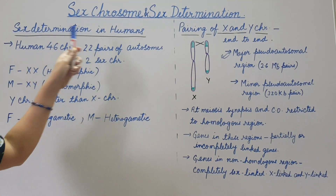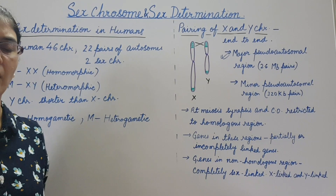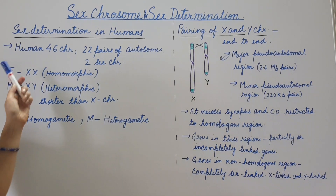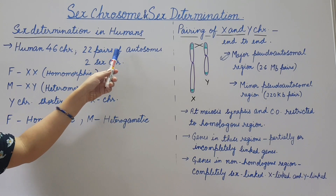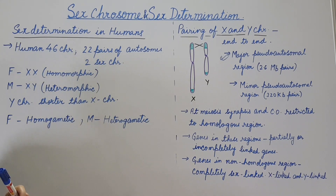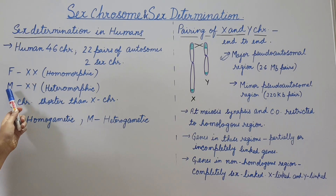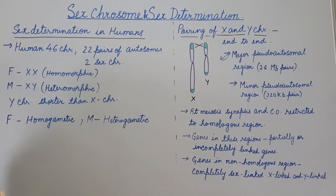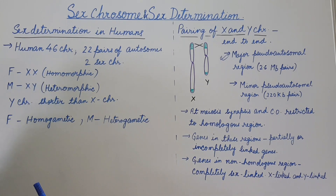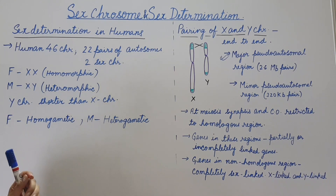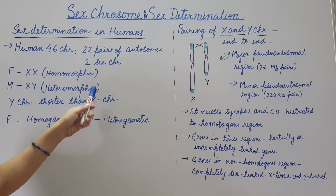Now let us see sex determination in humans. In the body cells of humans, 46 chromosomes are present: 22 pairs of autosomes and two sex chromosomes. Humans show sexual dimorphism — individuals are either female or male. In females, a pair of X chromosomes is present; these are identical, so females are homomorphic. In males, one X and one Y chromosome is present; these are non-identical, so males are heteromorphic.